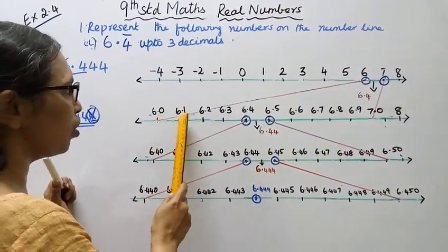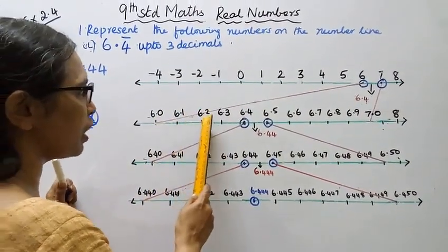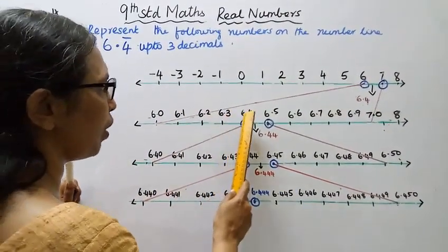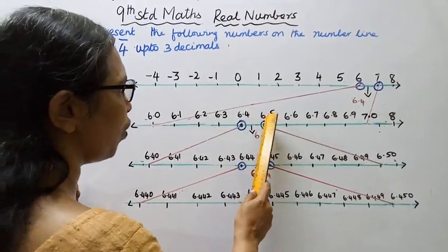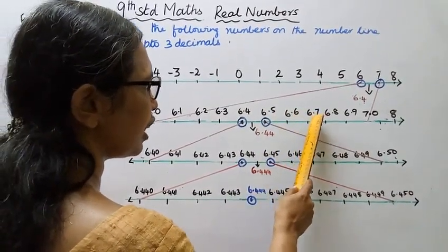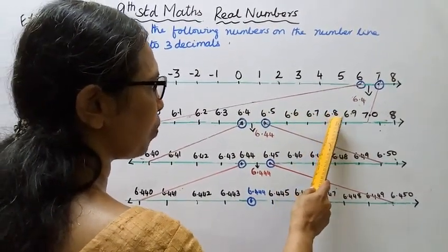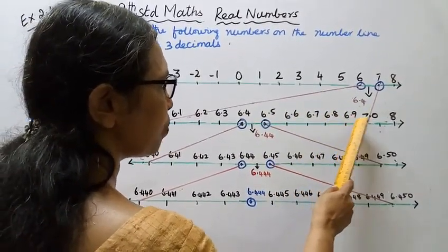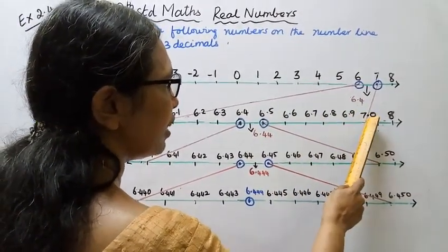We divide the segment between 6 and 7 into 10 equal parts, giving us: 6.0, 6.1, 6.2, 6.3, 6.4, 6.5, 6.6, 6.7, 6.8, 6.9, and 7.0. So 6.444 lies between 6.4 and 6.5.